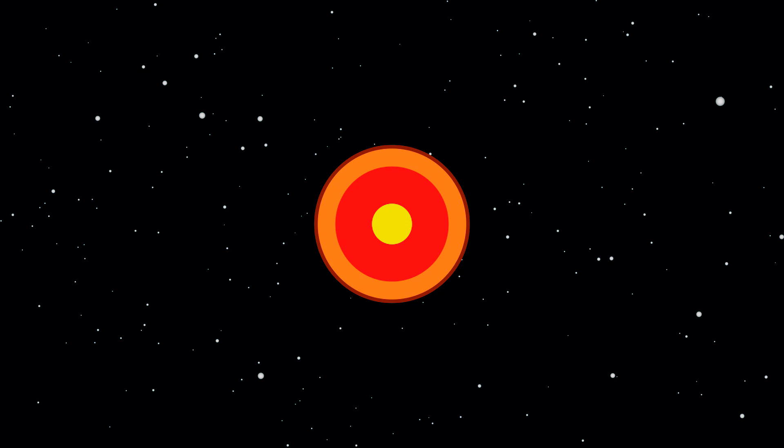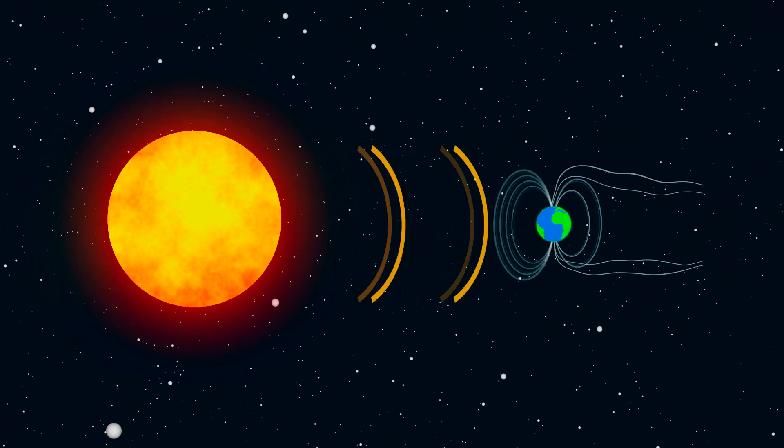As the Earth itself spins on its axis, the inner core spins as well, and it spins at a different rate than the outer core. This creates a dynamo effect or convection and current within the core. This is what creates the Earth's magnetic field.